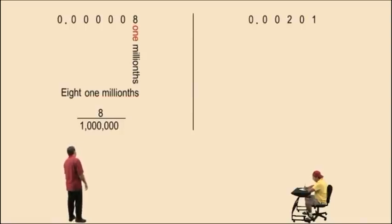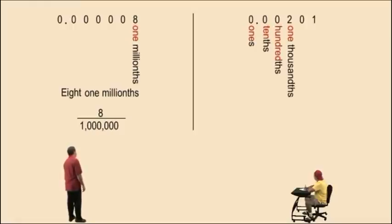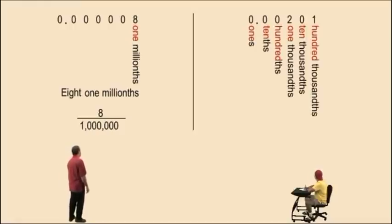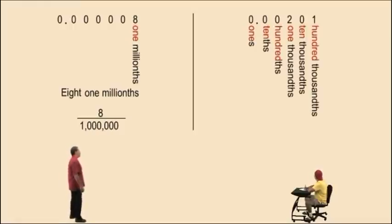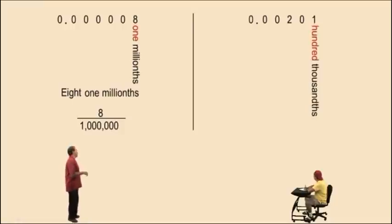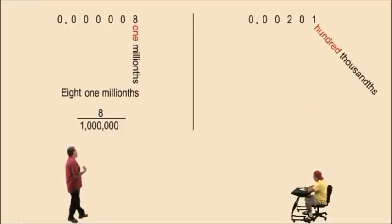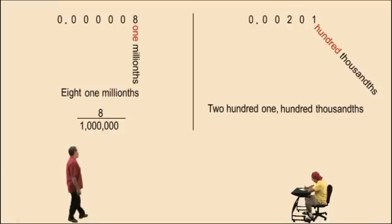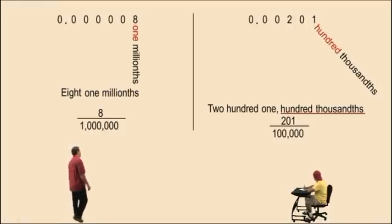Here's this one: 0.00201. Looking at the place value, we have ones, tenths, hundredths, one thousandths, ten thousandths, one hundred thousandths. Our rightmost digit is in the hundred thousandths place. Remember, that's going to determine our denominator of our fraction. But this time we have two hundred one hundred thousandths. So to write it as a fraction, two hundred one over one hundred thousand.